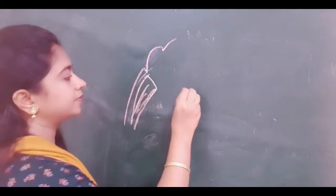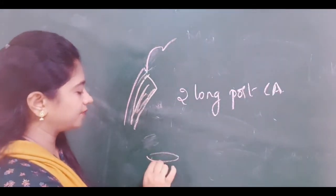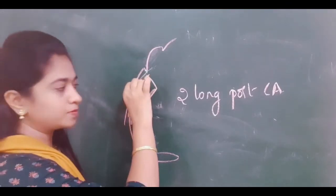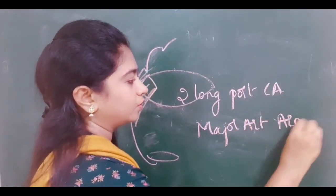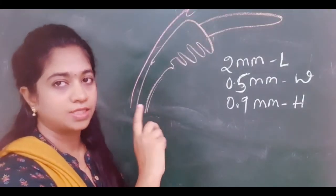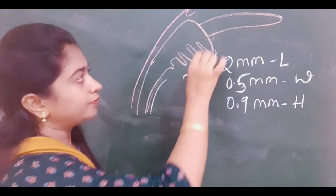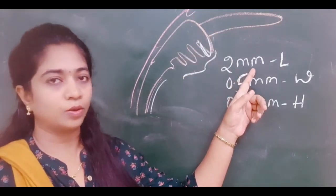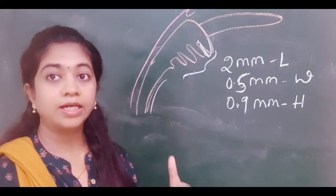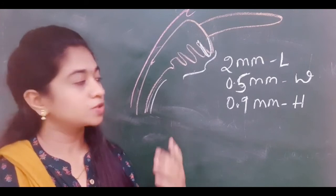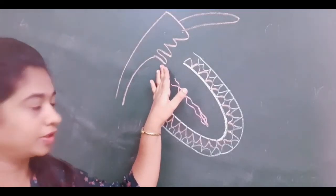The blood supply of the ciliary body comes from the two long posterior ciliary arteries, which enter the globe near the optic disc, travel along the sclera, and at the limbus unite to form the major arterial arcade. The pars plicata has numerous ciliary processes; each measures approximately 2 mm in length, 0.5 mm in width, and 0.9 mm in height. The combined surface area of all ciliary processes exceeds the surface area of the corneal endothelium — a large surface designed for aqueous humor production.